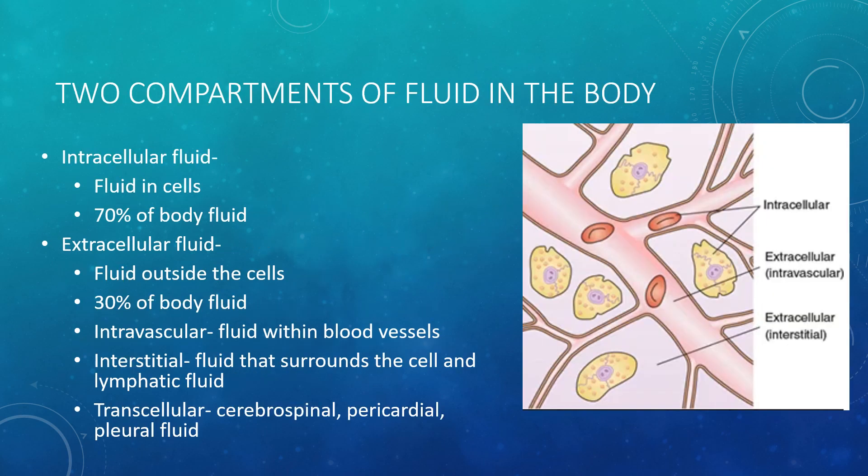The fluid in our body is stored in two compartments: the intracellular and the extracellular compartments. Intracellular fluid is found within the cells and accounts for 70% of all fluid in the body. This fluid is crucial for cellular function — it maintains the normal size of the cell, but any changes in intracellular fluid can make the cells swell and burst, or shrivel and die.